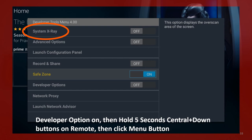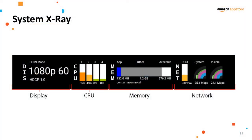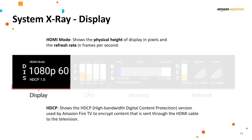You can activate System X-Ray by turning developer options on, holding the center button and down button for five seconds on your remote, and clicking the menu button — similarly to what we did for the safe zone. If you turn on System X-Ray, a small dialogue will be overlaid on top of the Amazon Fire TV UI. It contains a lot of information, with sections for display, CPU, memory, and network consumption. The display section shows information such as HDMI mode — the physical height of the display in pixels and the refresh rate in frames per second — and HDCP, which is the high bandwidth digital content protection version used to encrypt content sent through the HDMI cable.